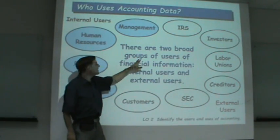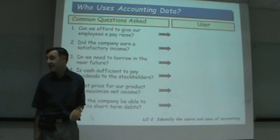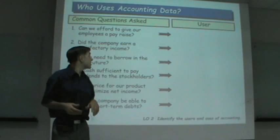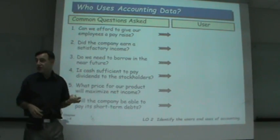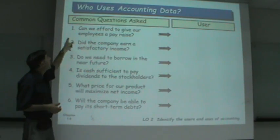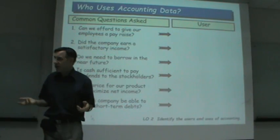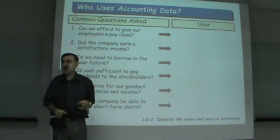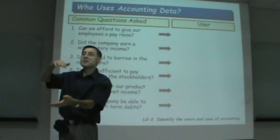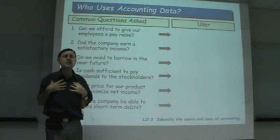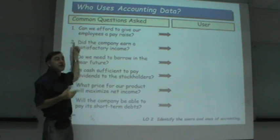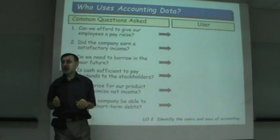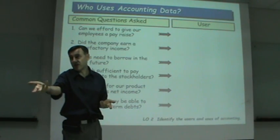If people are using accounting, they ask questions. For example, internal users ask: can we afford to give employees a pay raise? Can we increase salaries from $20,000 to $25,000? Another question is: did the company earn satisfactory income — in other words, did it make a profit? Another question is: do we need to borrow in the near future? They use accounting to decide whether they will have enough cash or will need to borrow.